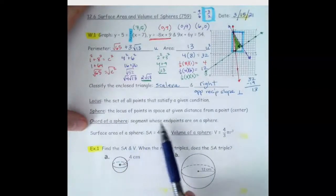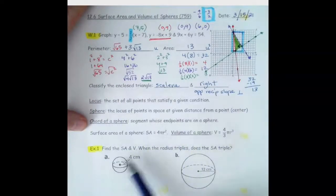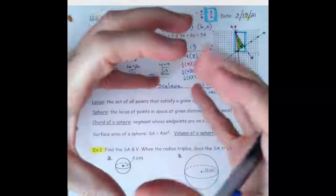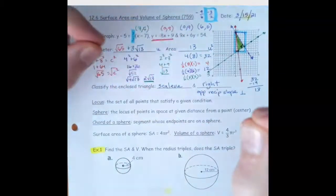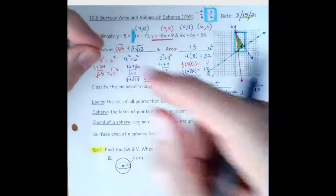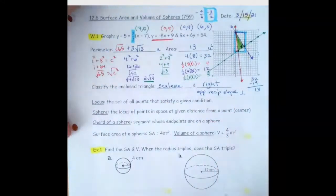A chord of a sphere is a segment whose endpoints are on the sphere. So we have one point on one side and one point on the other side, and we connect those two — that's a chord, a line segment that goes across a sphere.